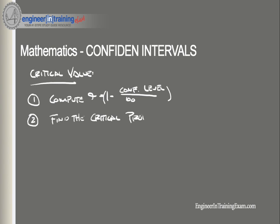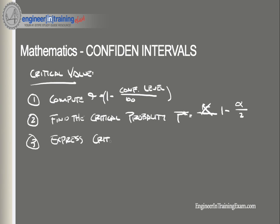Number two, we need to find the critical probability P-star, which is calculated as 1 minus alpha divided by 2. Number three, we need to express the critical value as a t-score. We do this by first finding the degrees of freedom of the problem, which is typically equal to the sample size minus one.